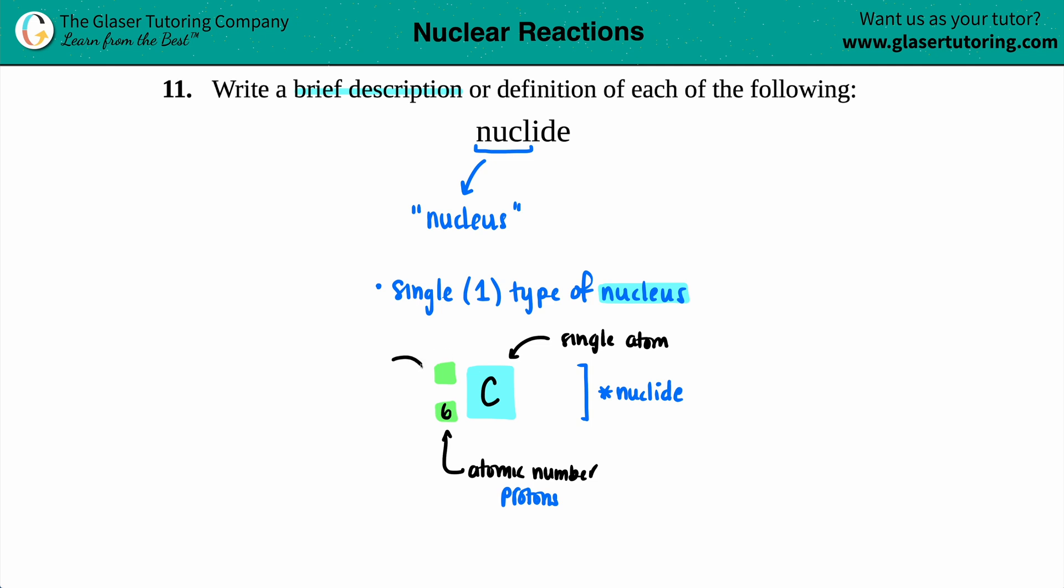The mass number, the atomic mass can change because you can have different isotopes of carbon, but the bottom number is always going to stay the same. So maybe I have a 12 atomic mass, a six...